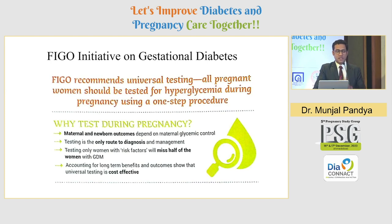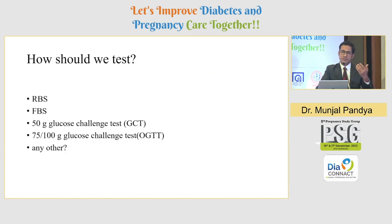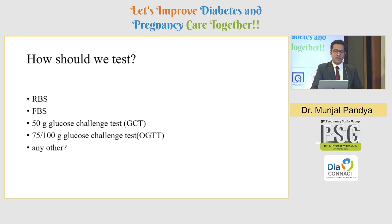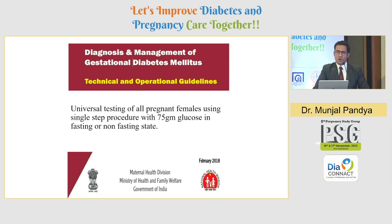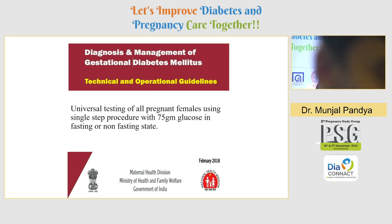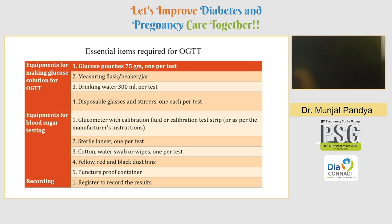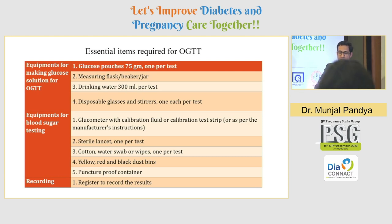FIGO says all pregnant females need to be screened for diabetes at the earliest possible time. Tests available include RBS, fasting blood glucose, 50-gram GCT, and 75 or 100-gram OGTT. To avoid confusion, the Government of India's Ministry of Health and Family Welfare in 2018 published guidelines mandating universal testing of all pregnant females with a single-step procedure — 75 grams of glucose — irrespective of fasting status. Equipment needed includes 75-gram glucose pouch, 300 ml distilled water, a calibrated glucometer, sterile lancet, cotton — not an alcohol swab — and puncture-proof container.